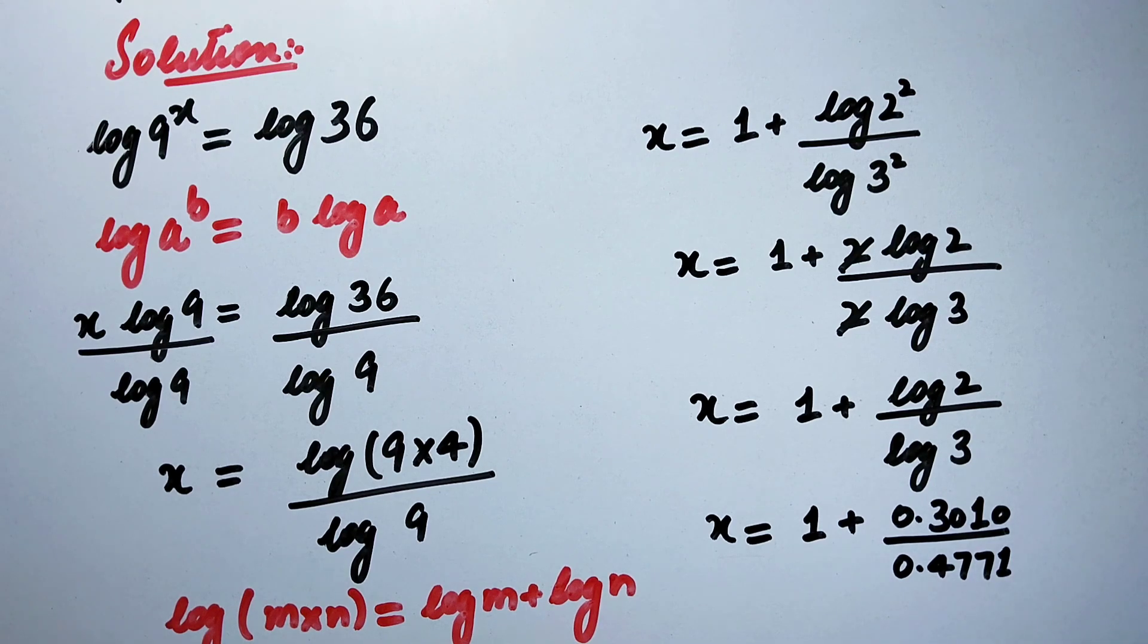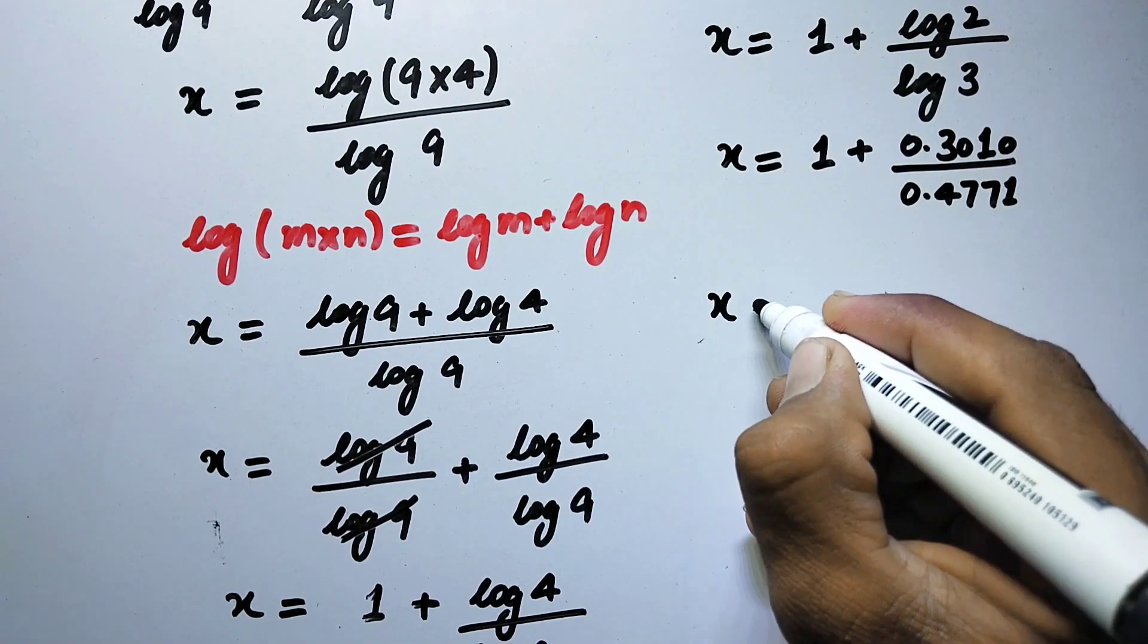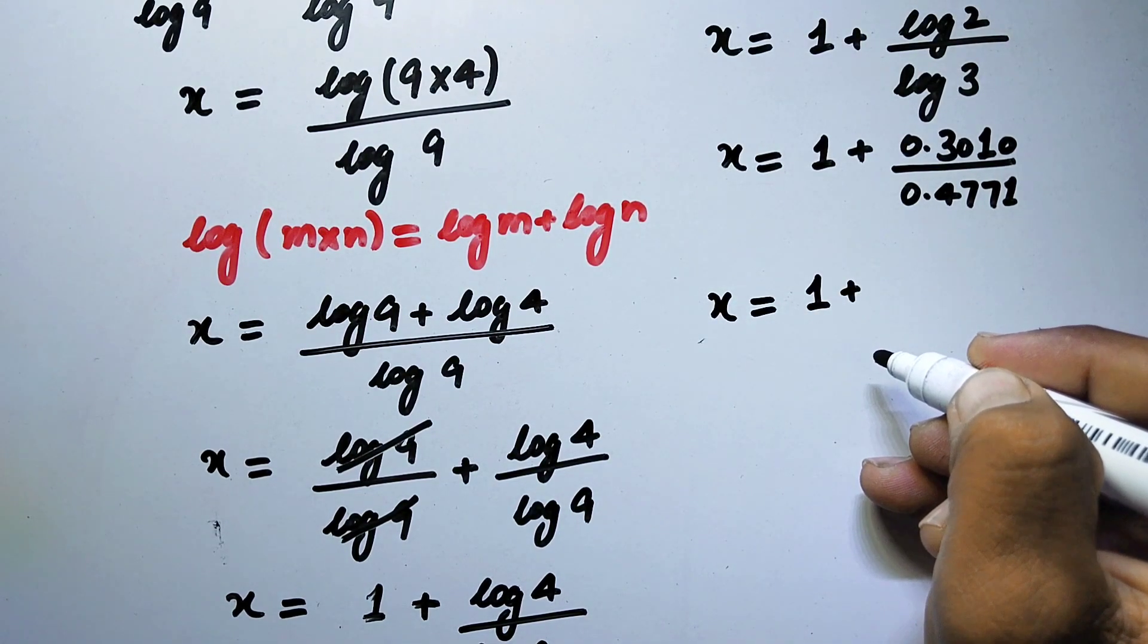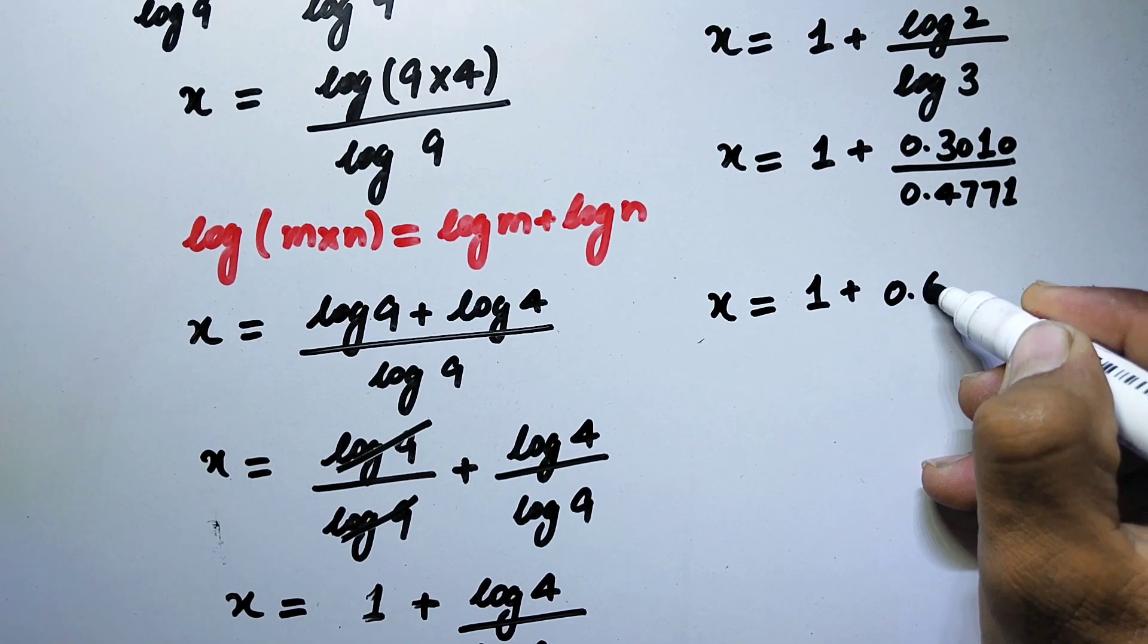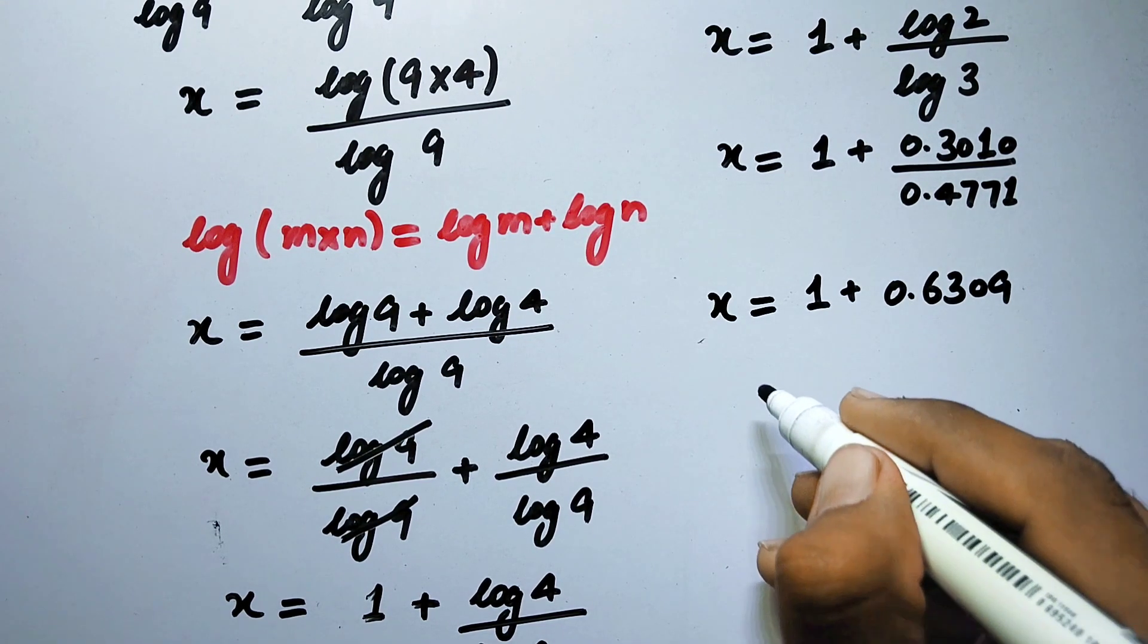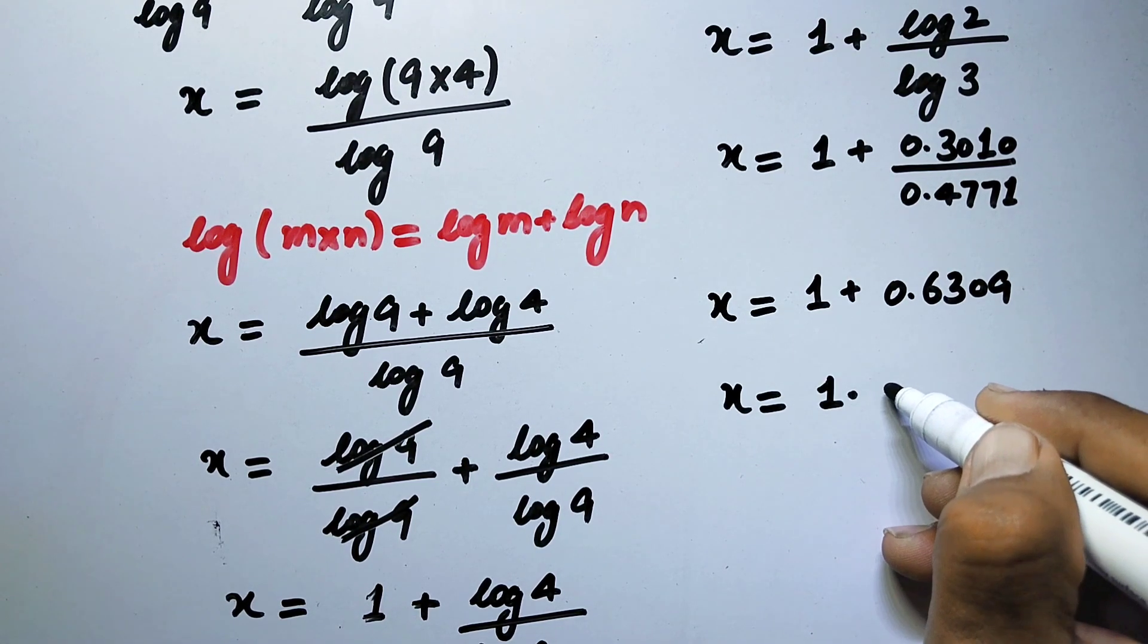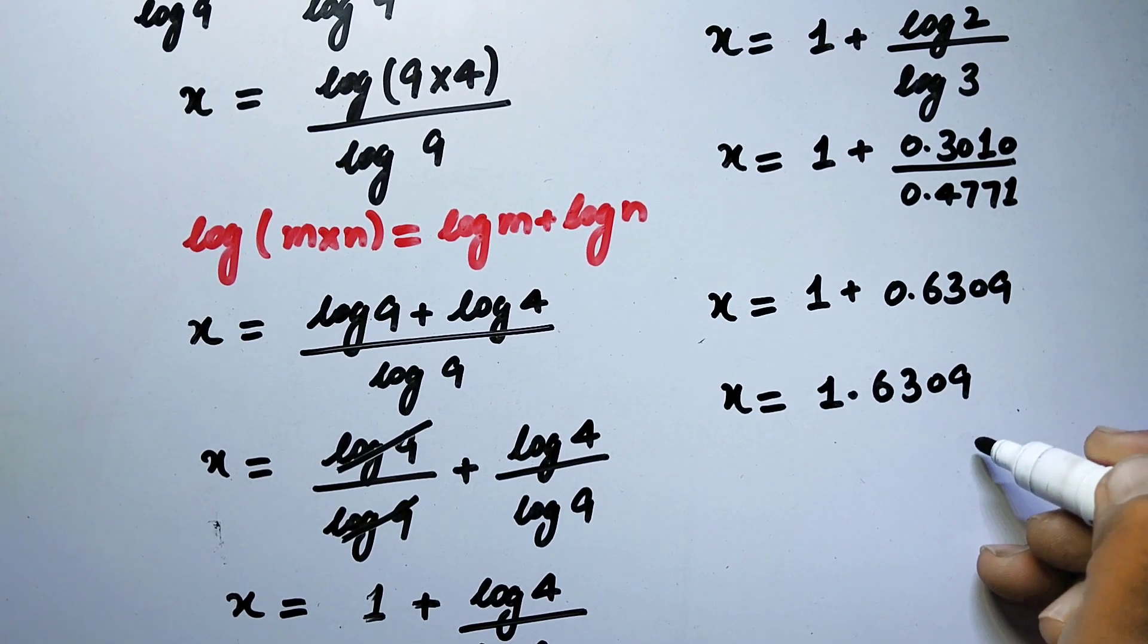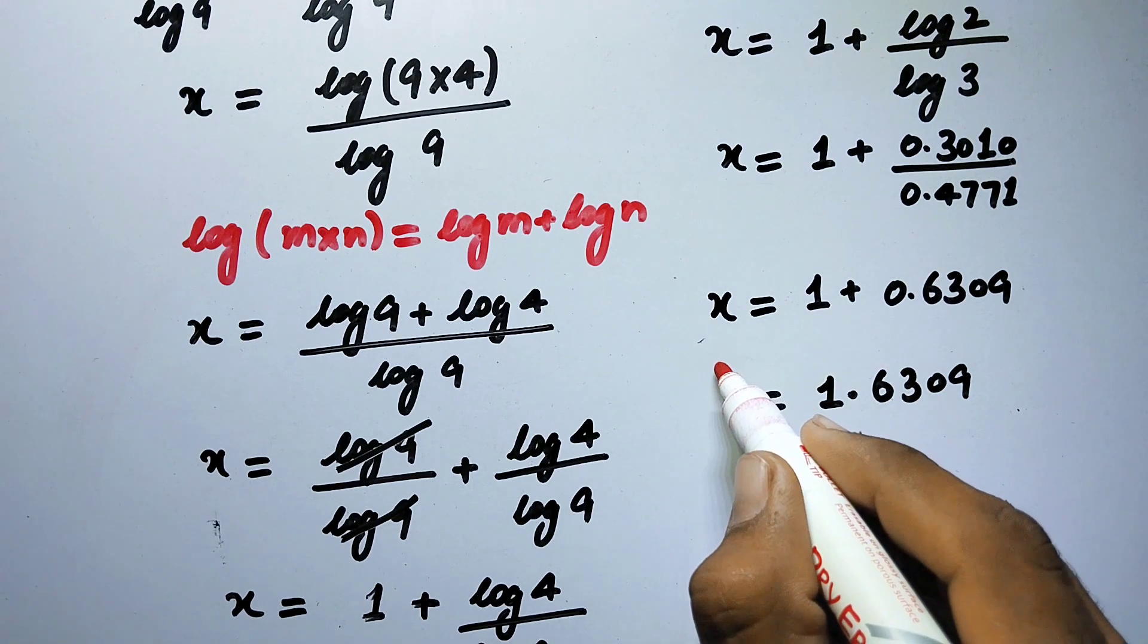Now in next step x will be equal to 1 plus, by solving this fraction we will get 0.6309. So now x will be equal to 1.6309 and that is our final answer.